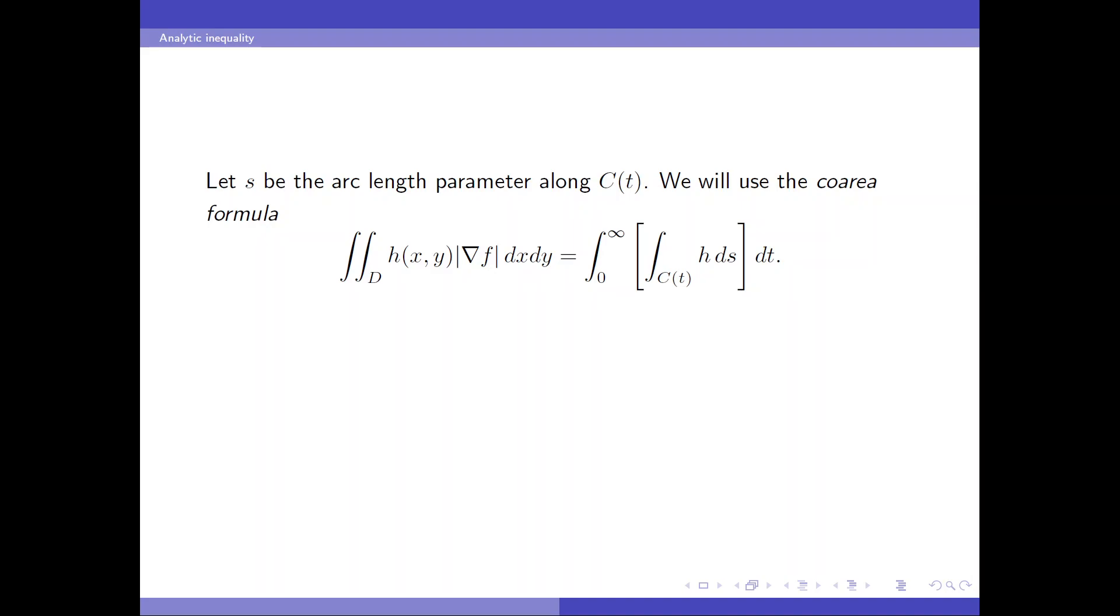So the double integral of a function h times gradient f is equal to the iterated integral that we first integrate h along the level curve and then integrate from 0 to infinity of t. We only need the simplest case h equals 1. So this first equality is the co-area formula and the isoperimetric inequality gives the lower bound of the integral of L(t). So we know that the L1 norm of the gradient is bounded below by an integral of square root of A(t).